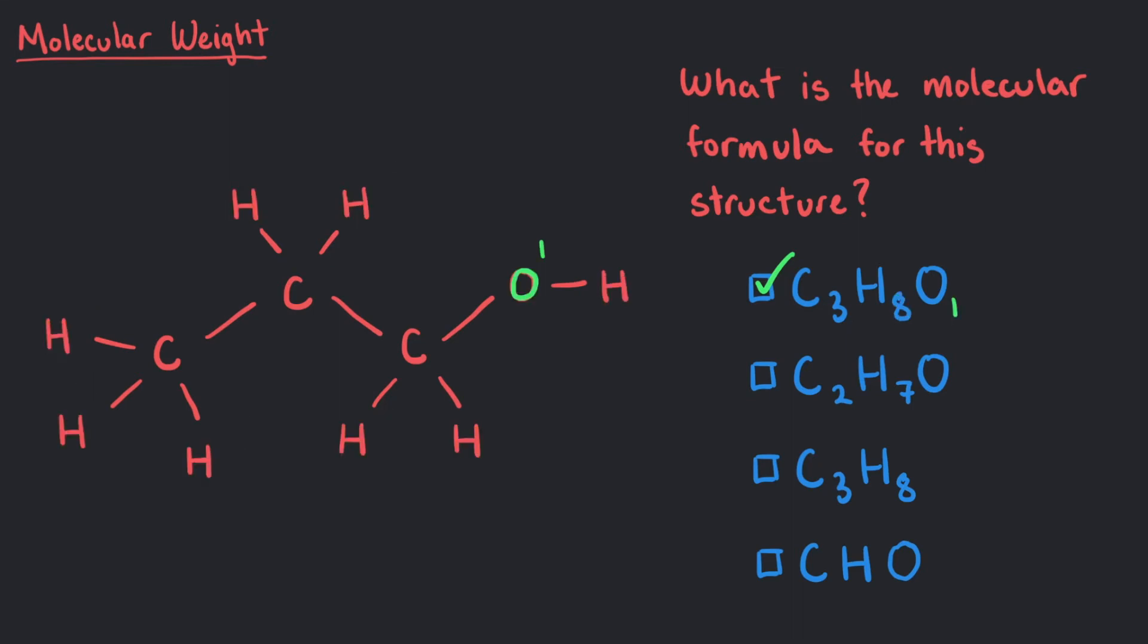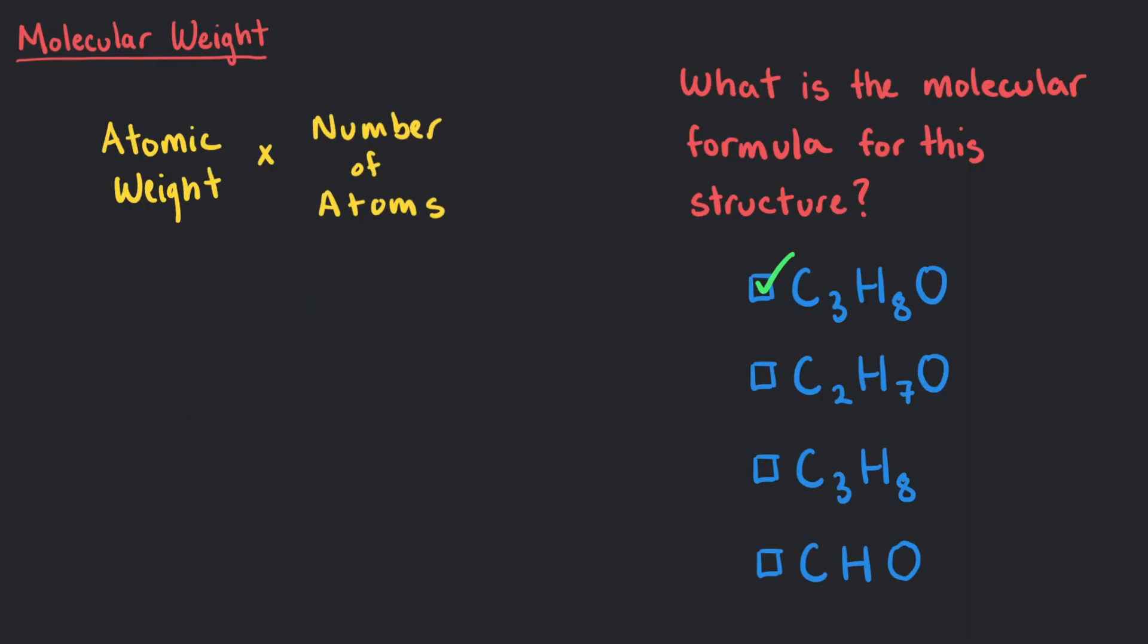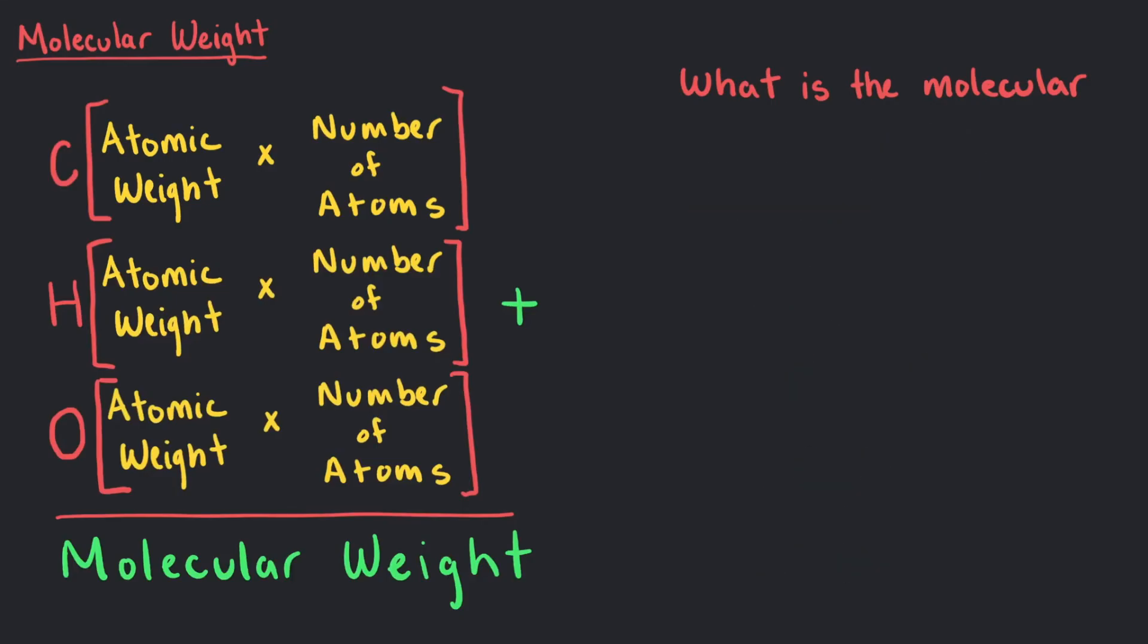All we have to do to find the molecular weight is multiply the average atomic weight of a certain atom by the number of atoms of that element, then add all the weights together. What is the molecular weight of C3H8O?